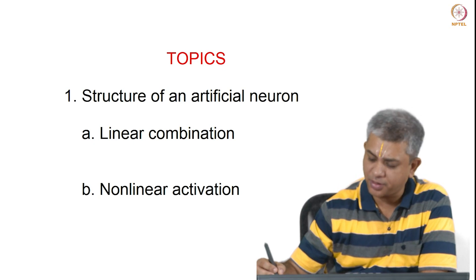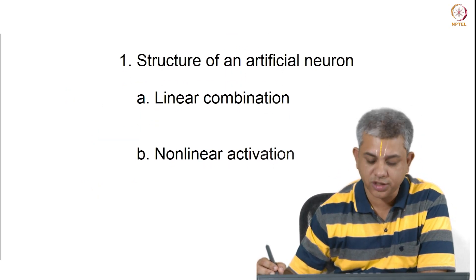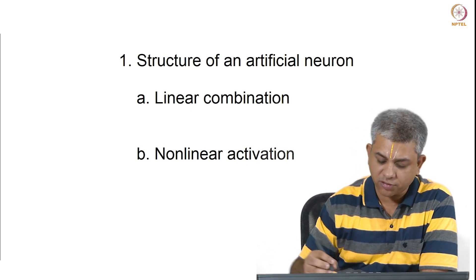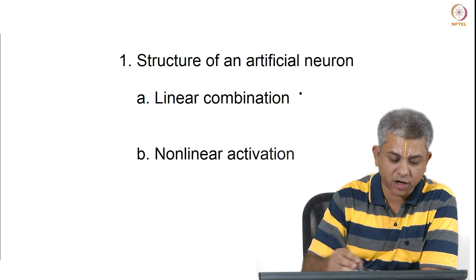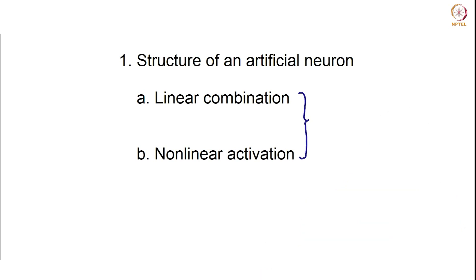The topics that we will be covering are what goes into an artificial neuron and the two operations. Really speaking, both of these operations were things that you had already seen within logistic regression. We have also used these two in logistic regression. We are just going to formally combine these operations into a single thing called an artificial neuron.